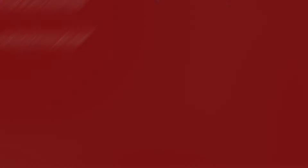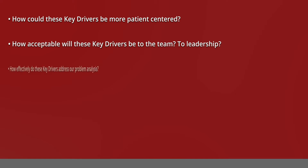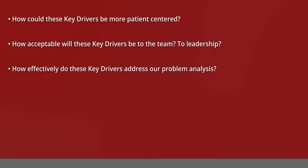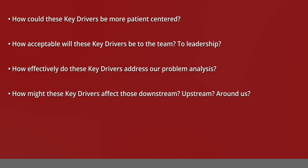These exercises should get you started, but how do we make sure what happened to 3 East doesn't happen in your improvement project? The next phase, refining key drivers, should help with that. To begin, assemble your team, read your list of key drivers, and discuss each of the following questions: How could these key drivers be more patient-centered? How acceptable will these key drivers be to the team and to our leadership? How effectively do these key drivers address our problem analysis? How might these key drivers affect those downstream of us — what about upstream? Take your time and try not to rush. Capture everyone's thoughts for each question before deciding on what changes might need to be made. You may even discover a key driver that you missed initially.